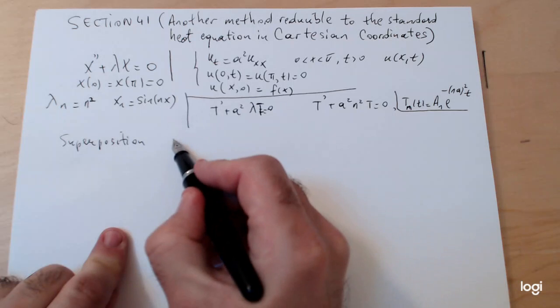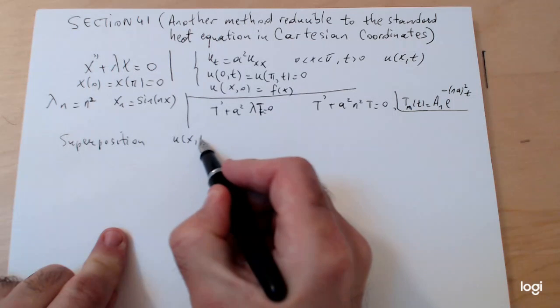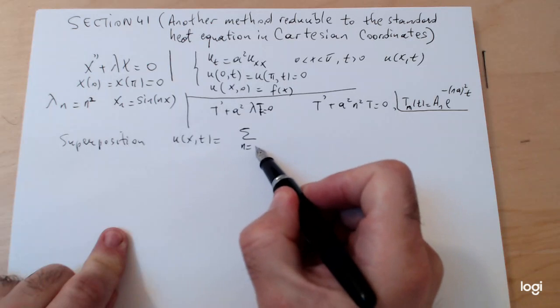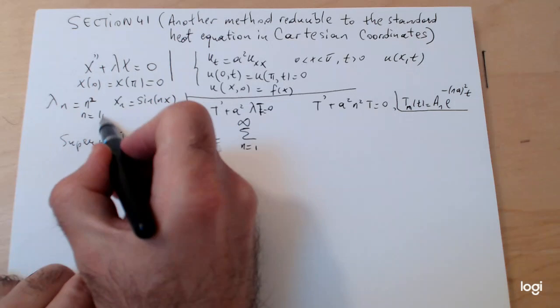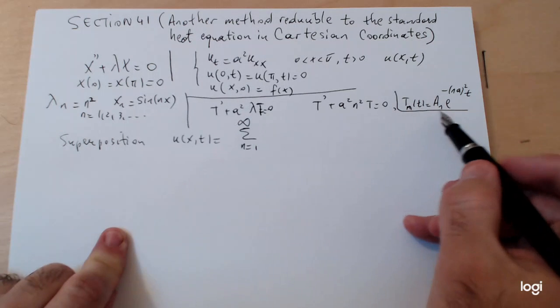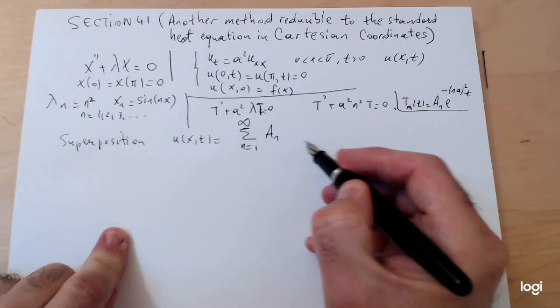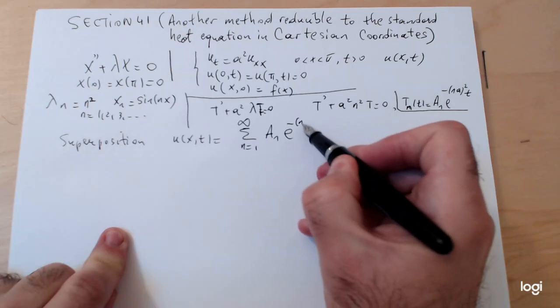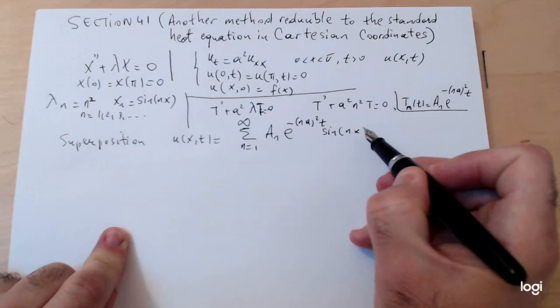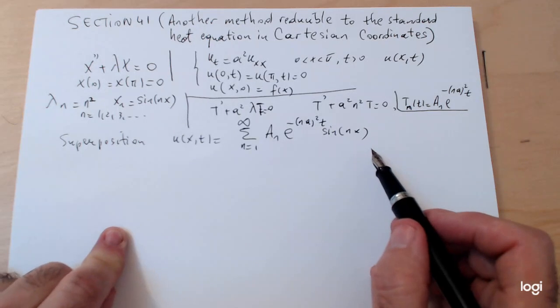Meaning that you assemble a solution in the form of a series, which in this case is the summation from one to infinity. I forgot to mention that n is from one, two, three, and so on. So one to infinity, a_n e^(-n²a²t) sin(nx), so your solution looks in the series format.